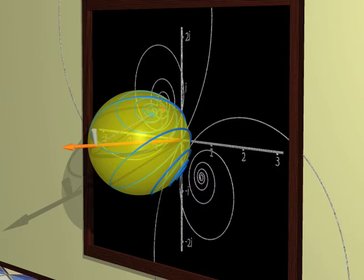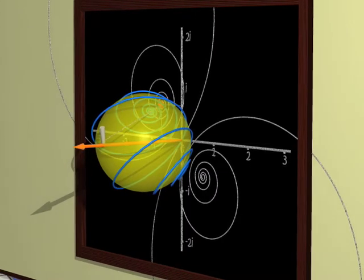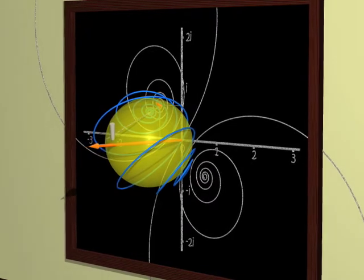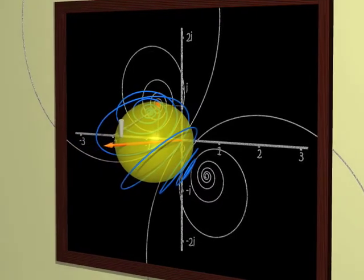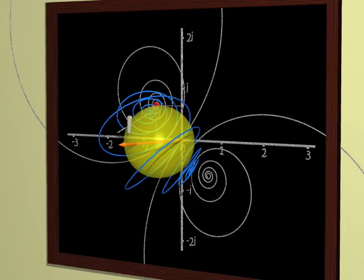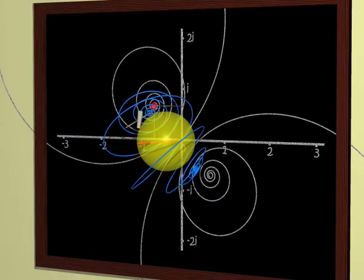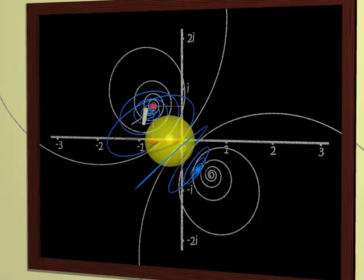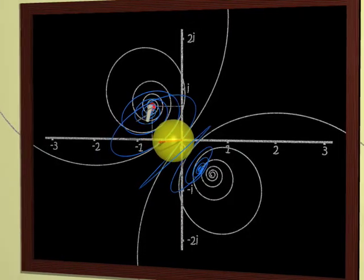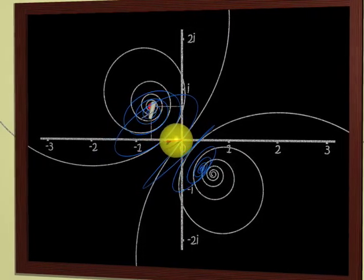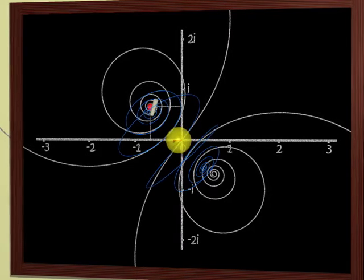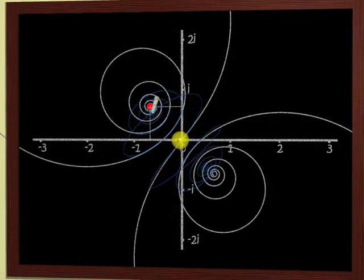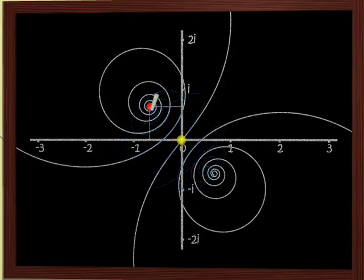Therefore, mathematicians say that the sphere is a complex projective line. Why line? Because one needs only one number to describe its points. Why complex? Because this number is complex. Why projective? Because we added a point at infinity using the projection. Aren't mathematicians strange when they try to tell us that the sphere is a straight line?